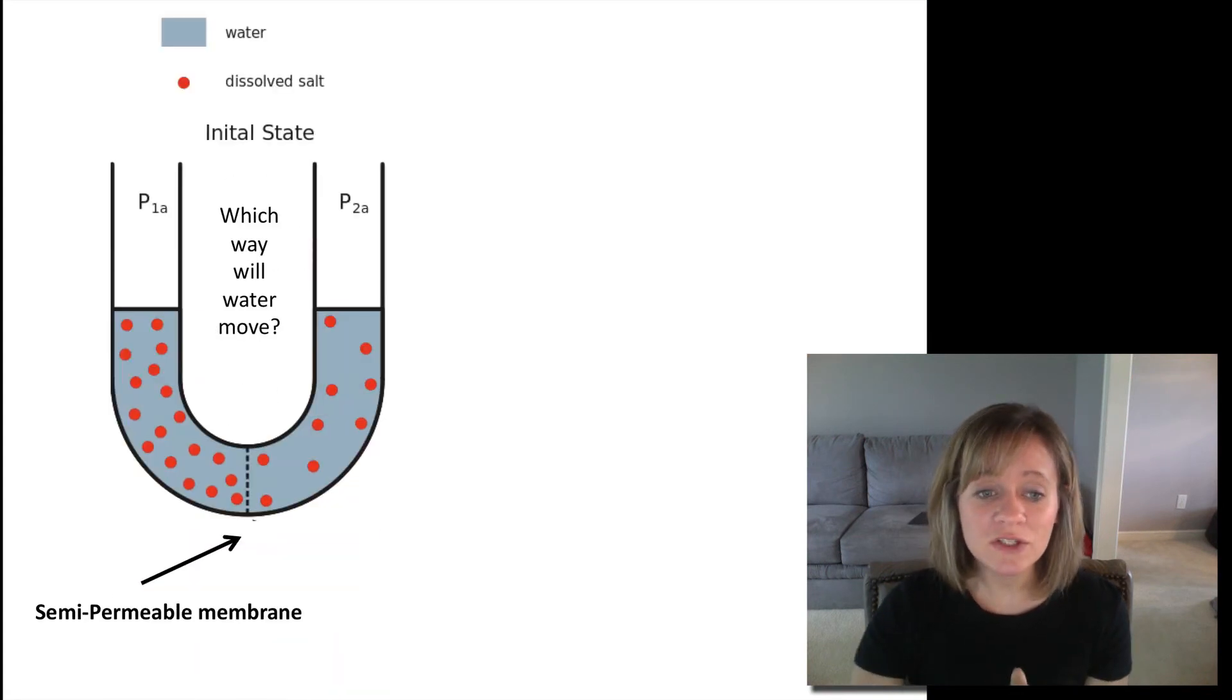So here's our example. This is called a U-tube because it's in the shape of a U. Here is our semi-permeable membrane separating the two sides. In gray we have water. In red we have some sort of solute. Notice on the left side we've got a lot of solute. On the right side, not a lot of solute, but we have a lot of water.